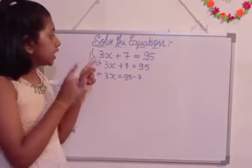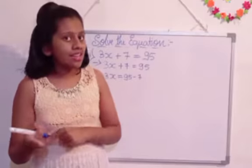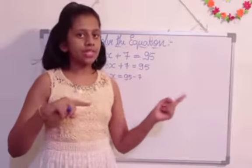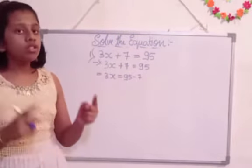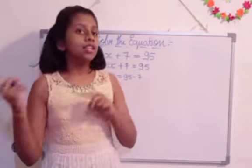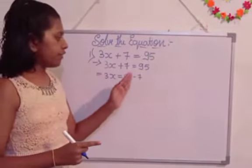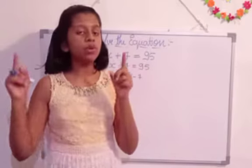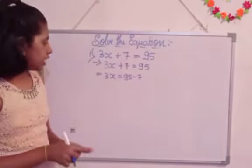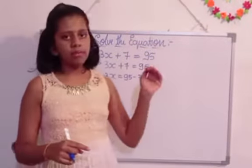How means? The 7 is shifted to the right side of the 95. Then we get minus 7. Plus 7 opposite minus 7. So the sign changes if it is shifted. So we got 95 minus 7. Minus 7 only you can consider it. Got it? So 3x is equal to 95 minus 7.